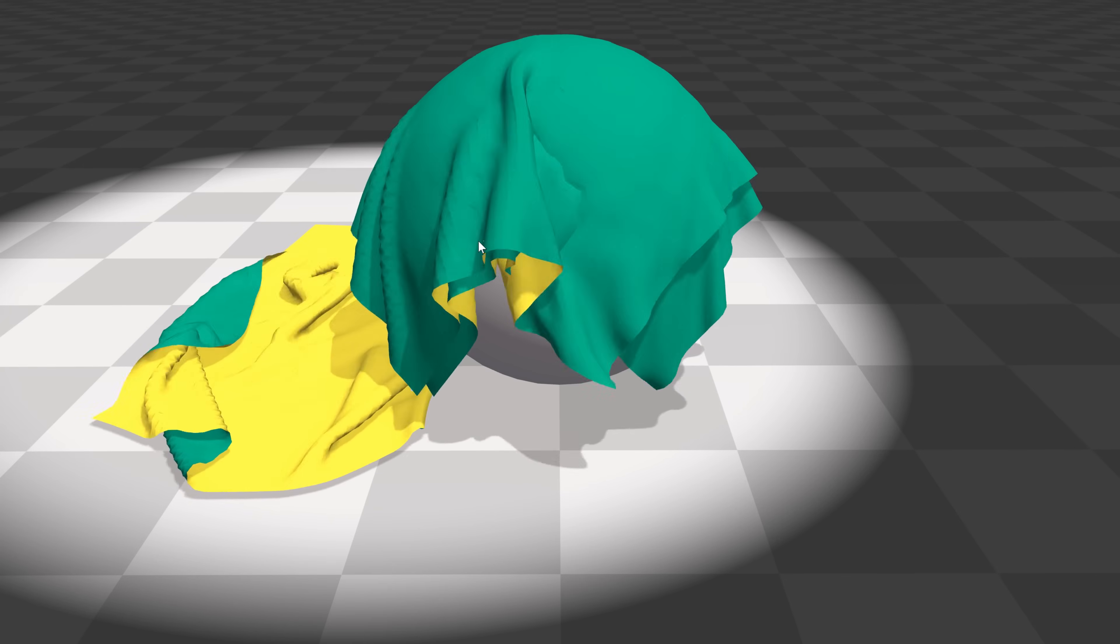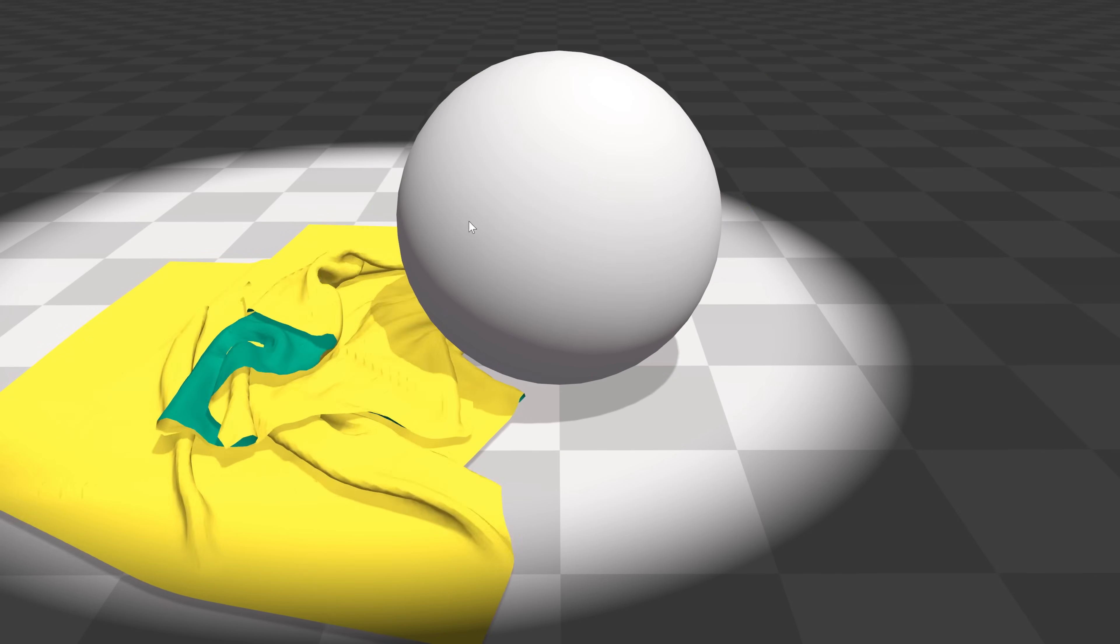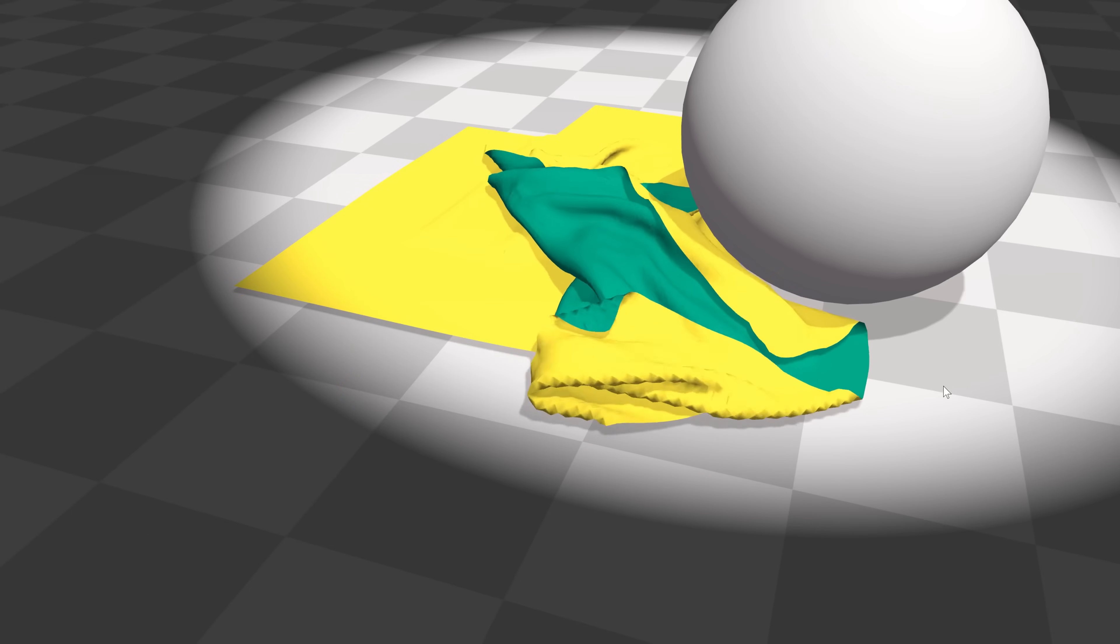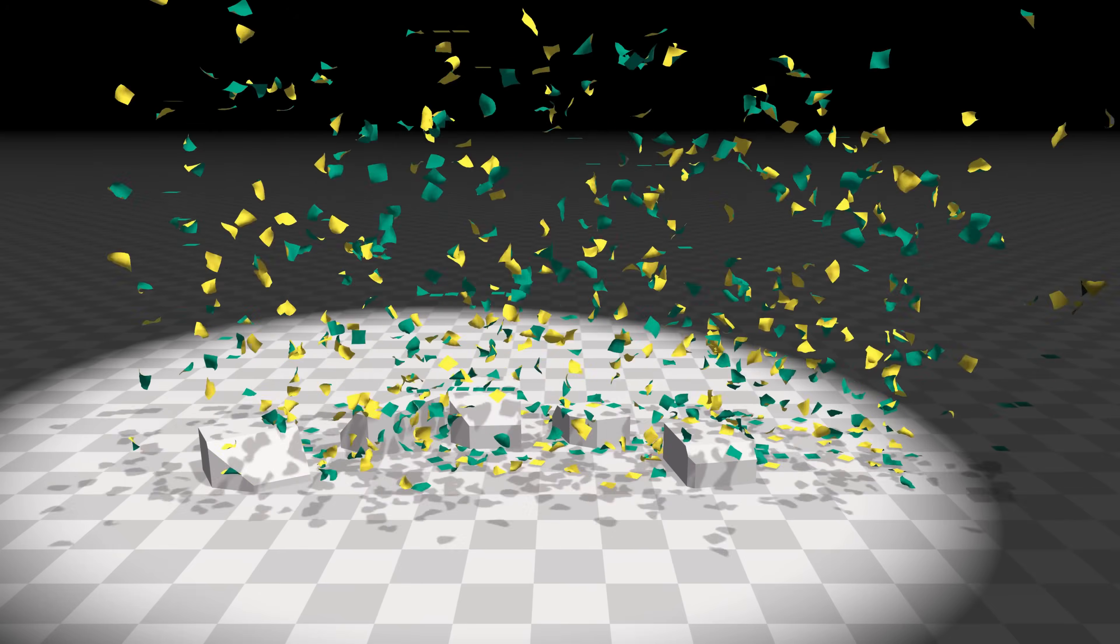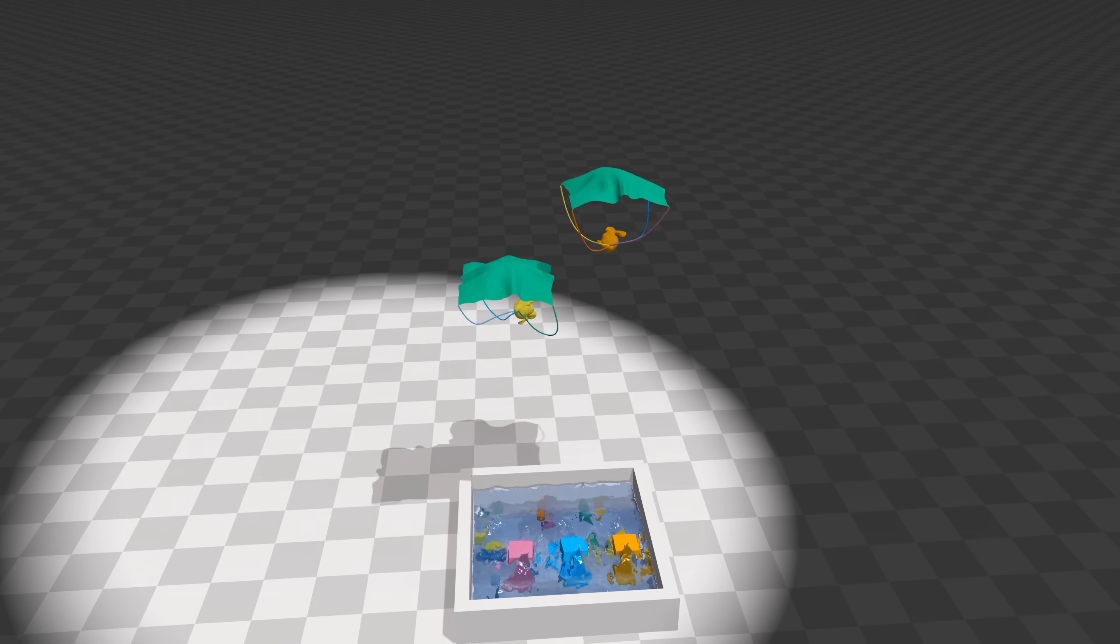Now, cloth physics is something we've seen done to death in games already. But as usual, the showcases seen in Flex go above and beyond. Because once you've finished messing about with wavy flags in the wind and fluttery bits of confetti, and bunnies on parachutes.